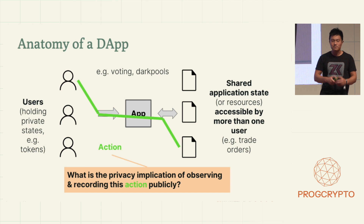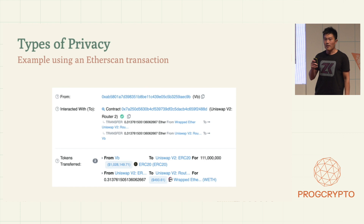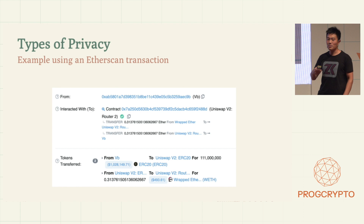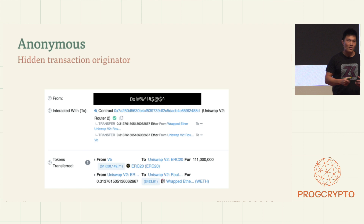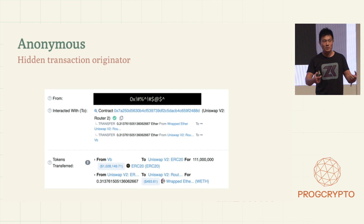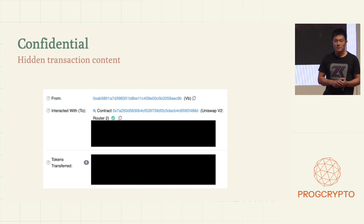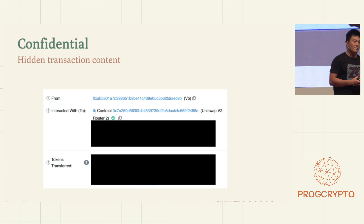Many people here are familiar with Etherscan. I'm going to define a couple notions of privacy through this interface. The first is anonymity: if a system is able to hide the address of the users interacting with the application, I'll call that anonymous. Second, if you can hide the contents of the transactions you see on Etherscan, then we can say the application is confidential.